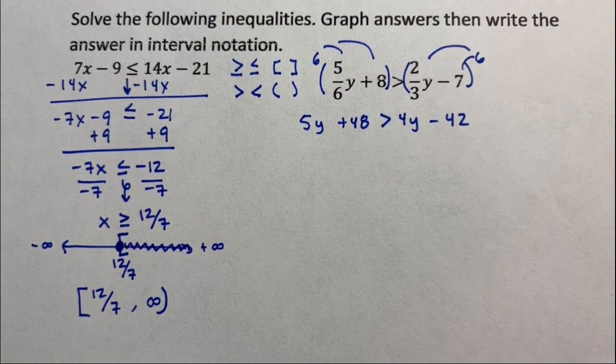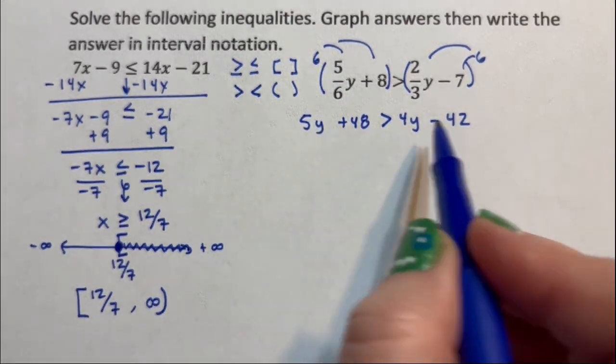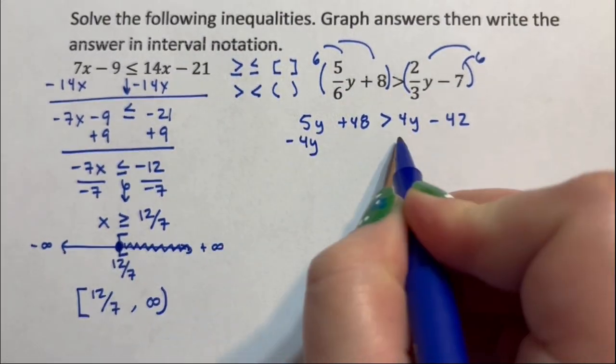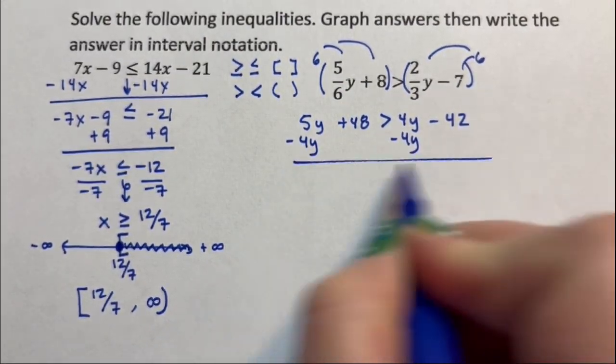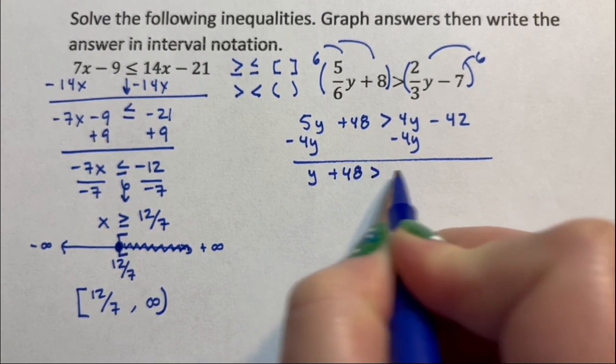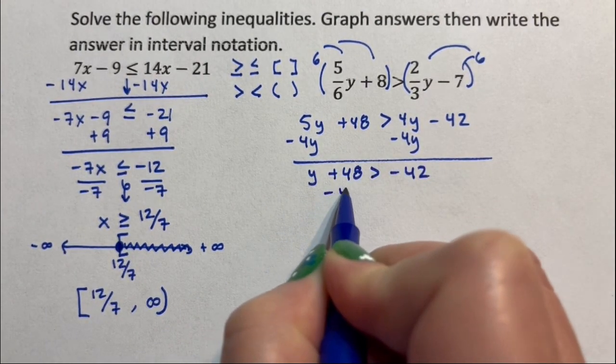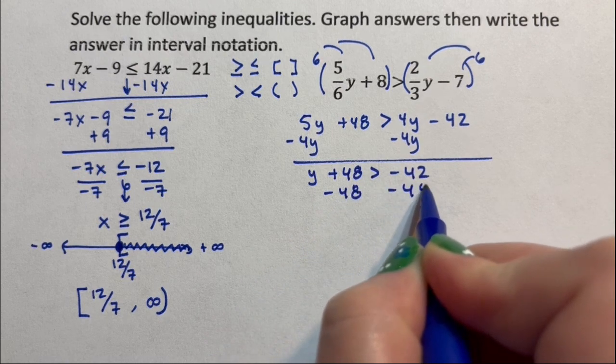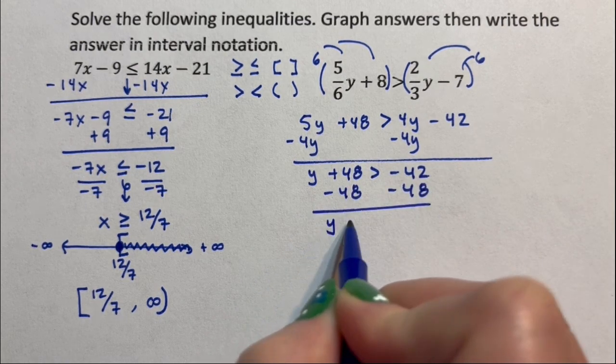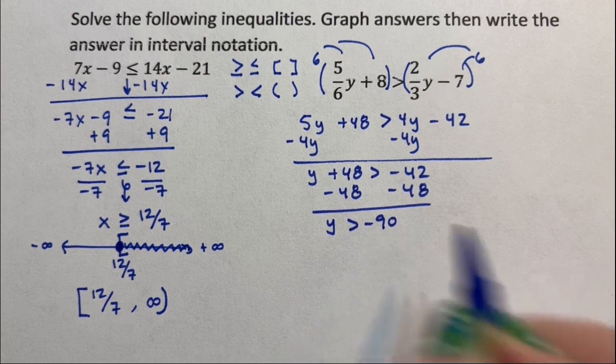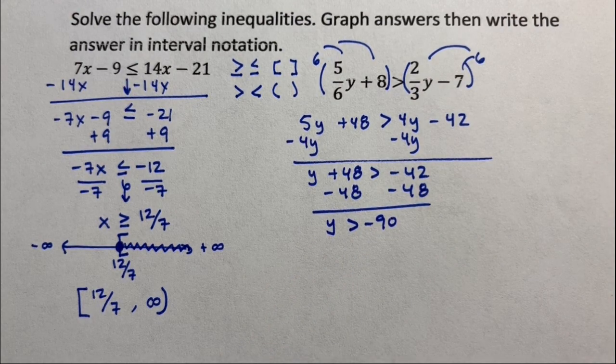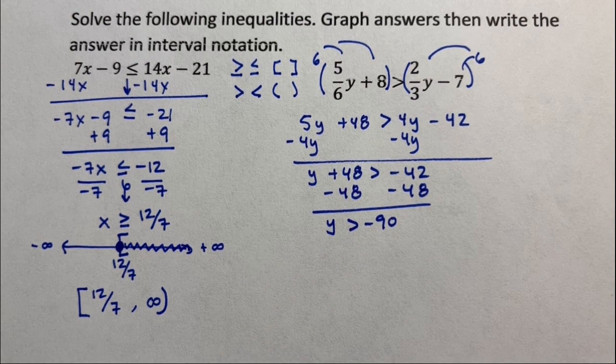Easy is maybe not the right word, but there's a 5y and a 4y. And when I subtract 4y from both sides, I'm going to get a y. So yeah, negative 42 and negative 48 may not be the simplest of things to do, but I don't have to divide, which, you know, that's lovely.